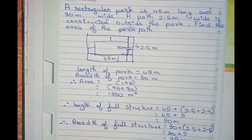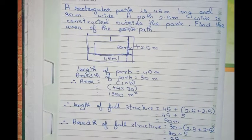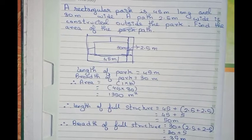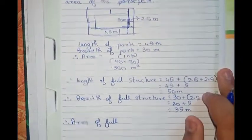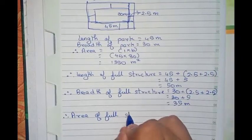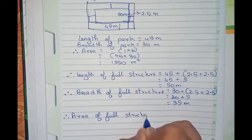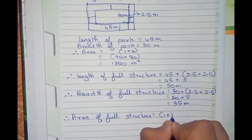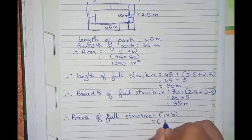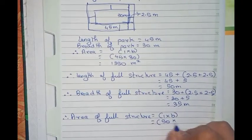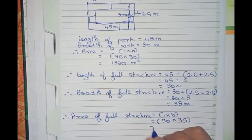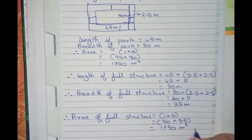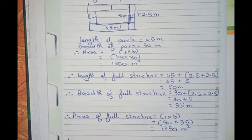Now, therefore, we find the area of the full structure. The area of the full structure equals length into breadth, equals 50 into 35, so that equals 1750 meter square.